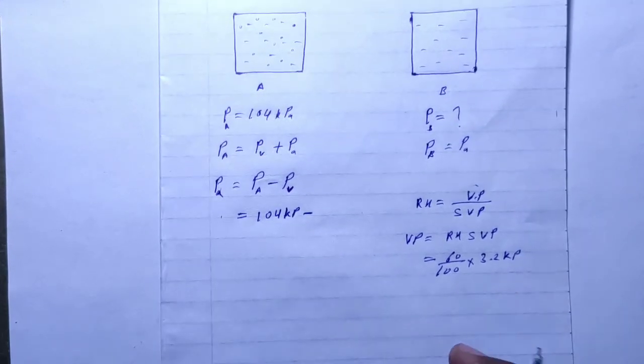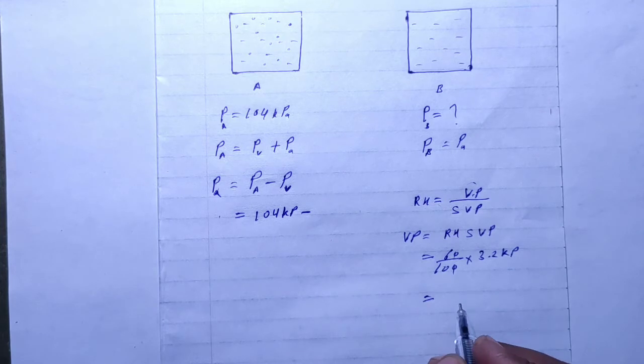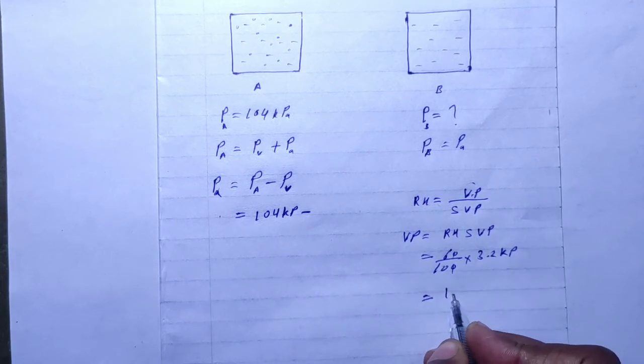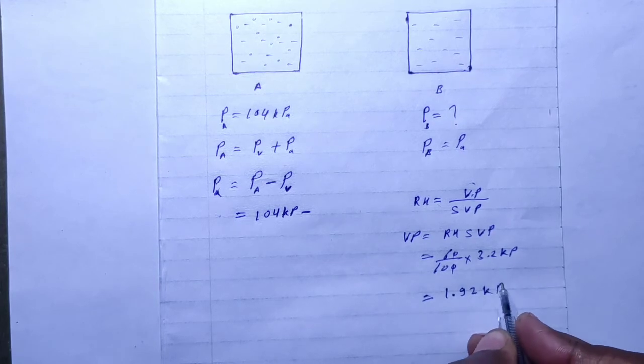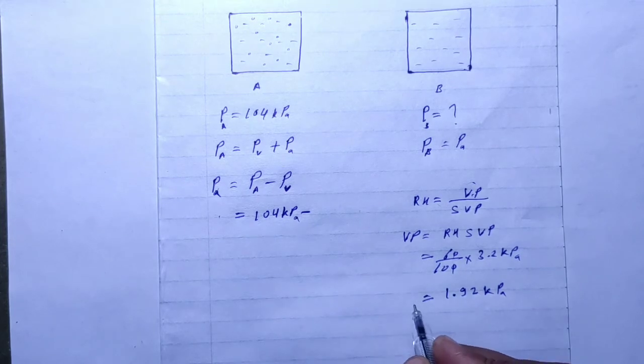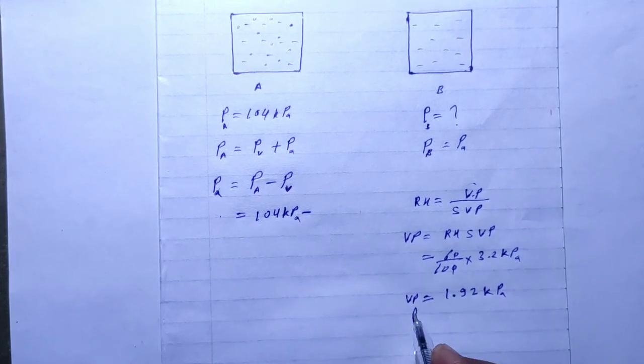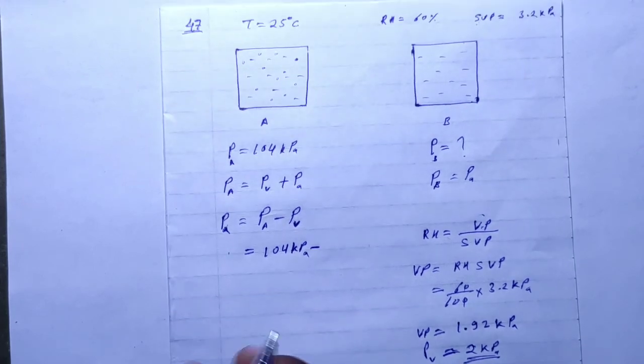So our answer is 1.92 kPa. This is the pressure of vapor. We have the vapor pressure now.